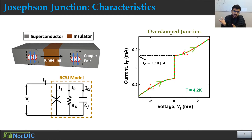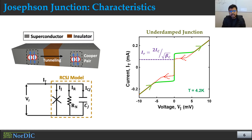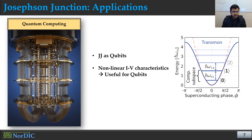In the under-damped condition, the relationship between current and voltage is linear, and there is hysteresis — two different paths for the forward and reverse switch. To control these damping conditions, you can connect a resistance in parallel with the Josephson Junction device and change the resistance value to switch between over-damped and under-damped conditions.